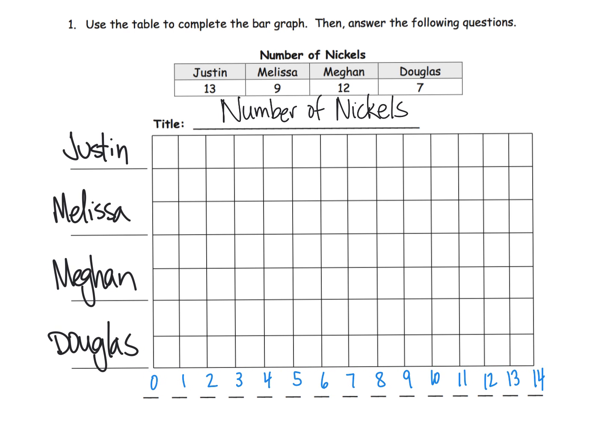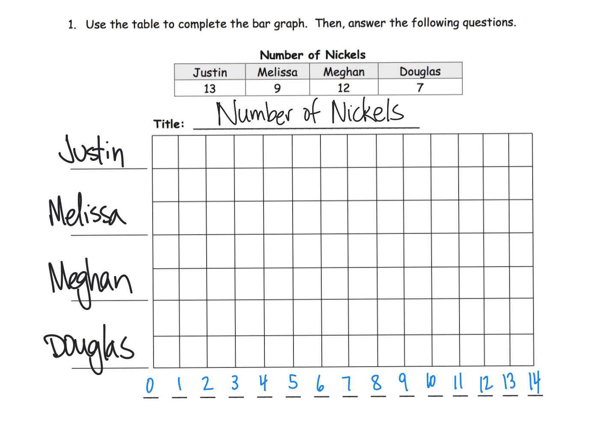Here's our values, our filled-in labels for our bar graph. We've got the title, which is almost always the same title as the title of the data itself. We've got our four categories—in this case it's Justin, Melissa, Megan, and Douglas.